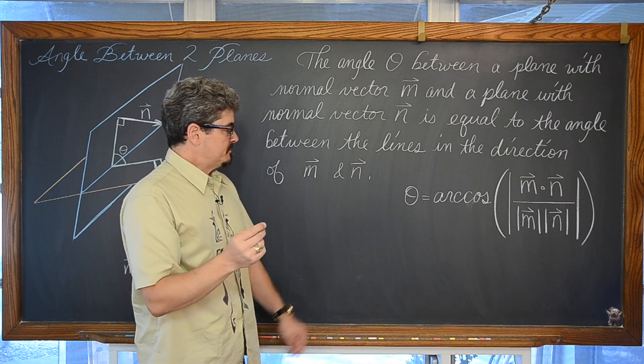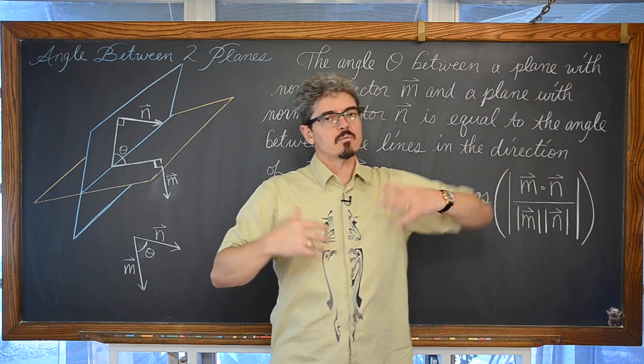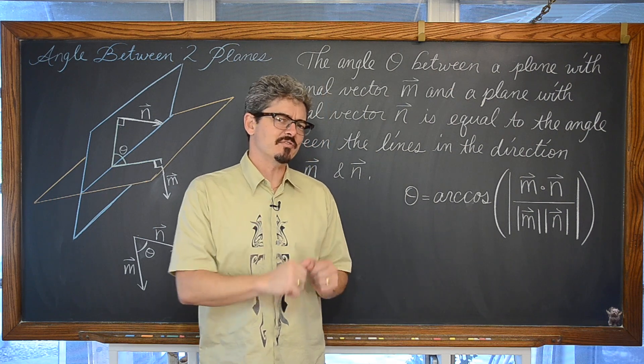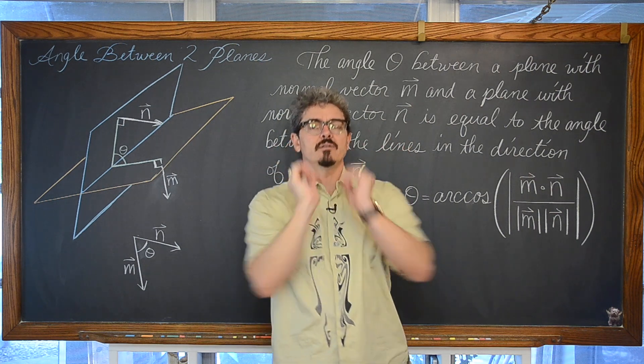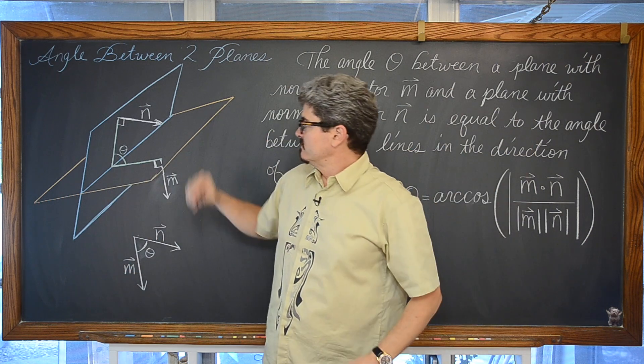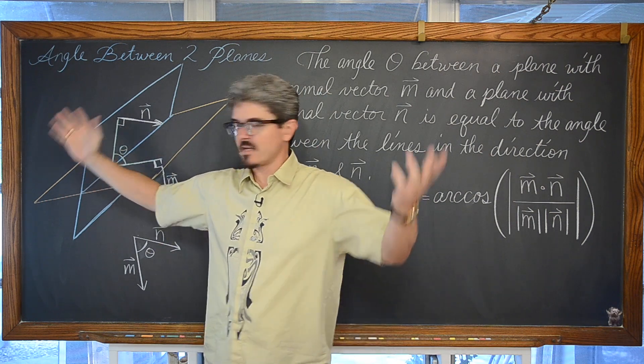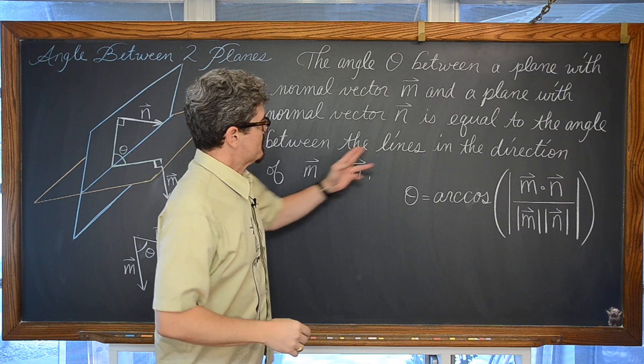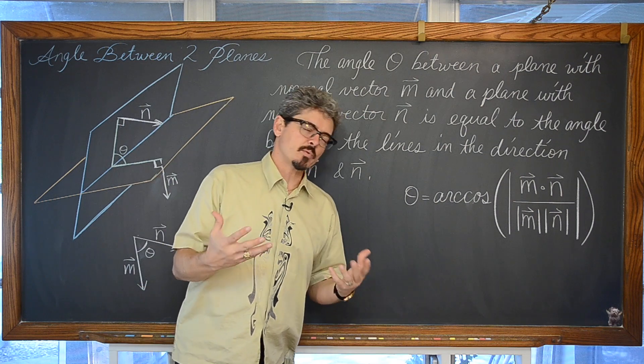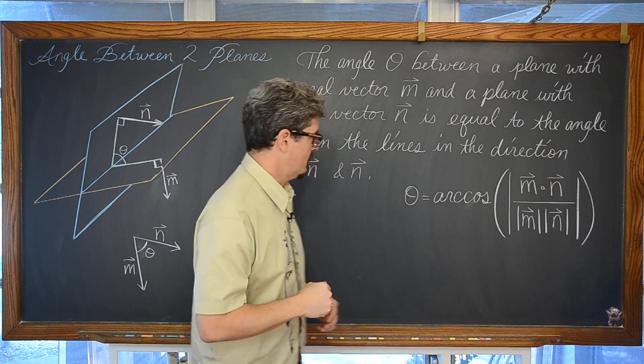One similarity is we do have these planes that extend in all directions, not like a vector that has an initial point and just goes in one direction. When we found the angle between two vectors we were accepting answers between zero and 180 degrees. With these planes and lines extending in multiple directions, we're only going to be concerned with that acute angle between the intersection, not necessarily the obtuse angle. We're going to limit those answers between zero and 90 degrees.